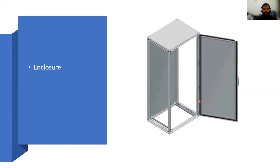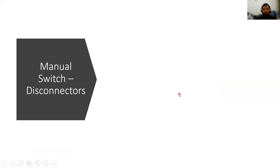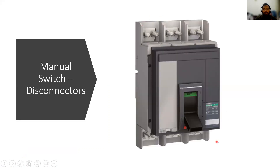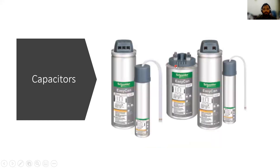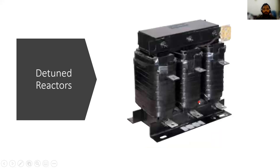The first component is the enclosure, which is generally used for the protection of the capacitor bank. Inside, all capacitors, detuned reactors, and controllers are kept inside the enclosure. Second is the manual switch disconnector, which acts as a switch to isolate the supply from the capacitor bank side. Then we have capacitors — either single phase or three phase — which compensate reactive power. And detuned reactors, which are used in series with the capacitor banks.